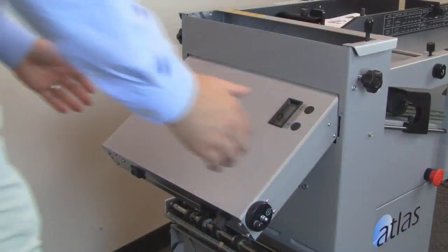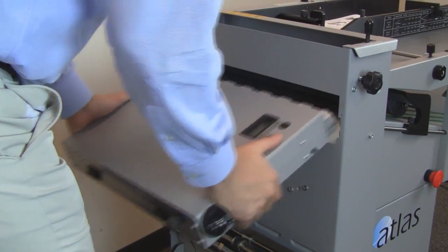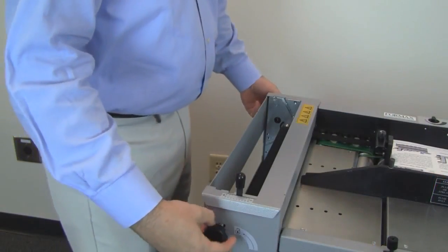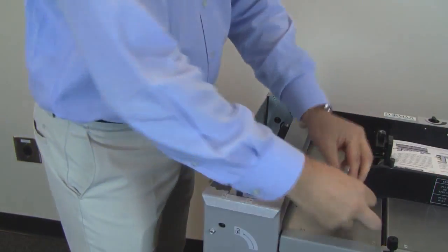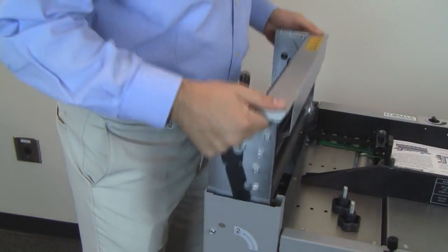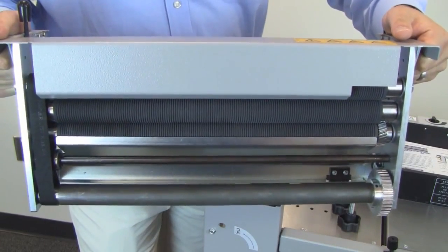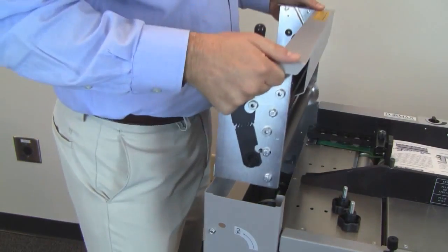To access the fold rollers for routine maintenance or clearing, remove the fold plates, then loosen and remove the thumb screws on either side of the folder. Then you can easily slide the fold roller compartment up and out of the folder for complete access. It is just as easy to slide it back into position.